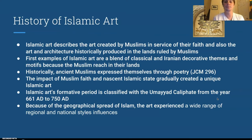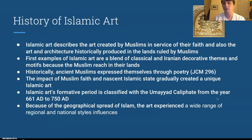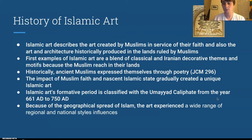Islamic art's formative period — the beginning — is classified with the Umayyad caliphate from the year 661 AD to 750 AD. Because of the geographical spread and reach, the art experienced a wide range of regional and national style influences. Everything came together over time, and it wasn't one moment in history or one place where Islamic art formed. It was an art form that developed over time.